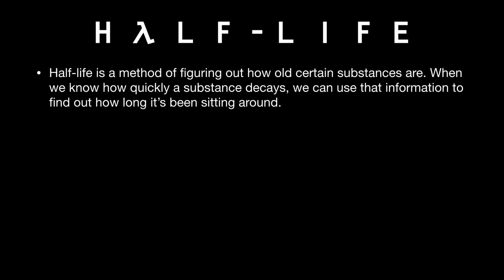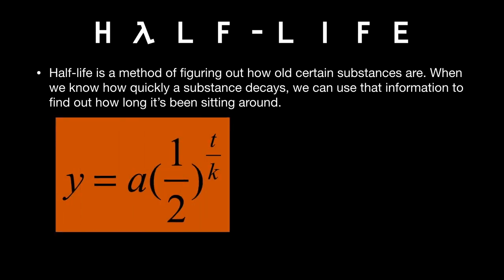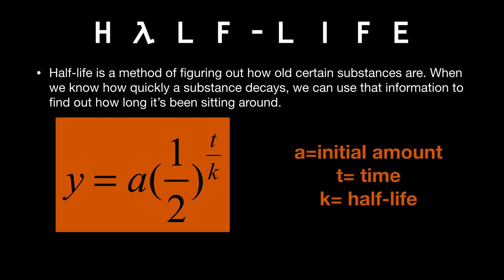Now we're going to talk about half-lives. Half-life is a method of figuring out how old certain substances are when we know how quickly a substance decays. The formula is: A times one-half to the t over k, where A is the initial amount, t is the time, and k is the half-life. Please note: time and half-life must be in the same unit of measure — minutes with minutes, hours with hours, days with days, years with years.